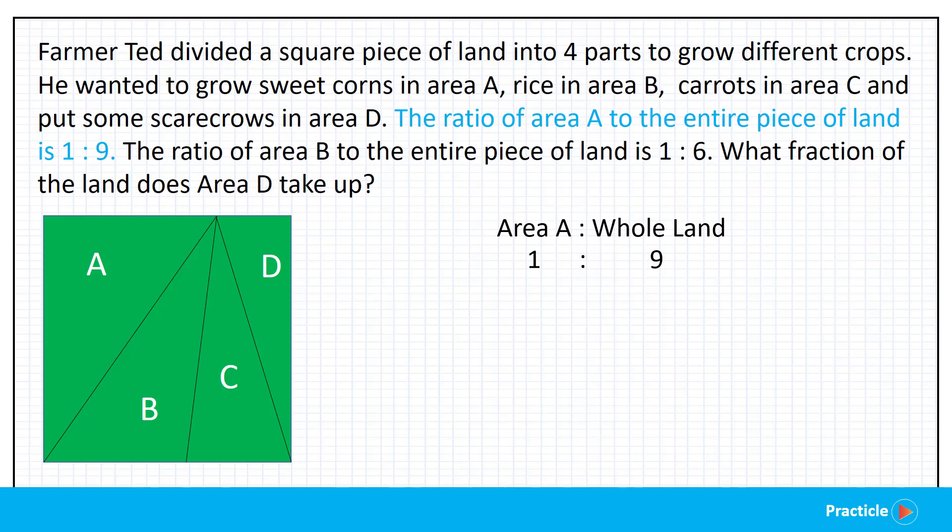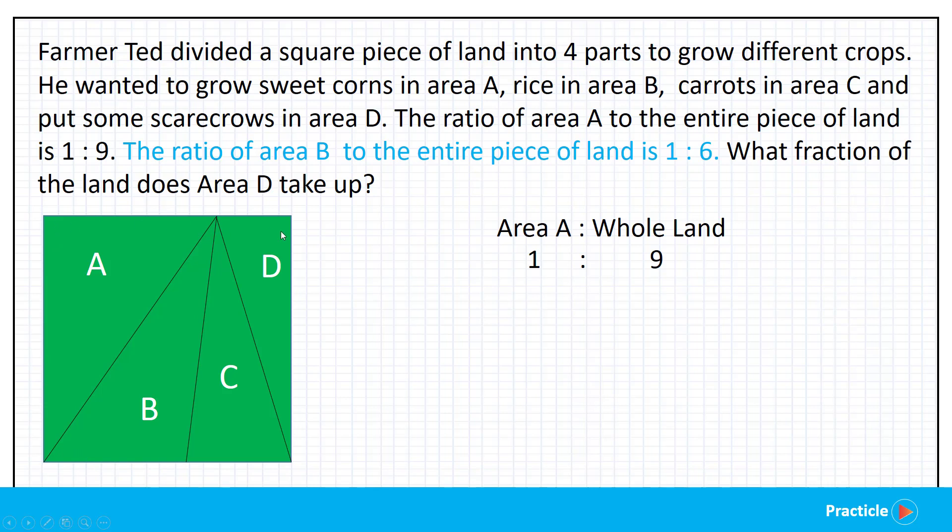Reading on, we are then given that the ratio of area B, the part with the yummy rice, to the area of the entire piece of land is 1 is to 6. And what can we tell from this? Just like how we read this ratio earlier on, we can tell that area B is represented by 1 part, while the area of the entire piece of land is represented by 6 parts.